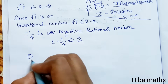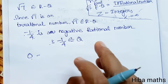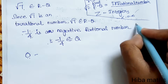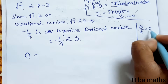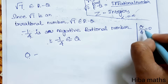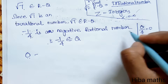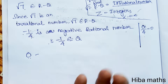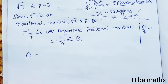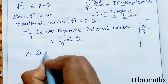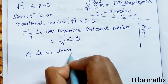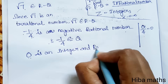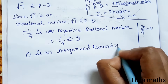Next is 0. Zero is an integer — integers range from minus infinity to infinity and include 0. Also, 0 by anything gives 0, so 0 can be written as 0 by 4, which is in P by Q format, making it a rational number. So 0 belongs to two categories: integers (Z) and rational numbers (Q).